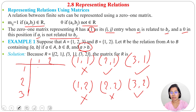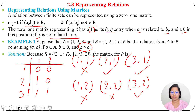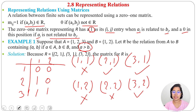Now we write the matrix. We write 1, 2, 3 on the left side and 1, 2 on the top. For row 1: (1,1) is not related — 0; (1,2) — 0. For row 2: (2,1) — 1; (2,2) — 0. For row 3: (3,1) — 1; (3,2) — 1. So it will be 1 whenever there is a relation and 0 when there is no relation.